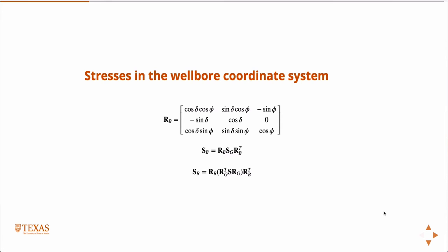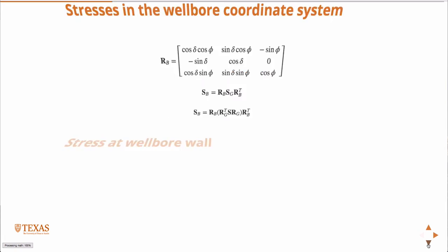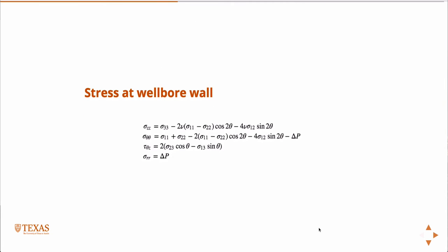And so if you wanted to just sort of do that all at once, you can build up your rotation matrices for the geographic coordinate system into the wellbore and just do this all at once. Now, the SB, the stress in the wellbore is in Cartesian coordinates, and usually when we're working in the wellbore, it's more convenient to work in polar coordinates. And so these are the conversions from the Cartesian coordinates to polar coordinates.